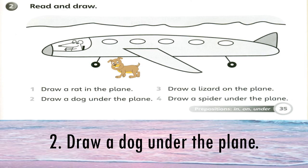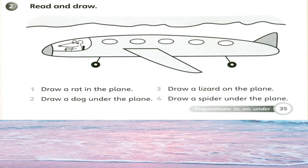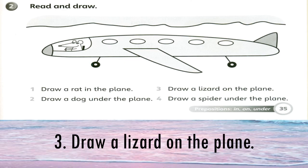Let's look at sentence number three. Draw a lizard on the plane. You are going to draw, lukis, a lizard seekor cicak on. On tu maksudnya di atas. On the plane, di atas kapal terbang. Contohnya seperti ni. Lukis seekor cicak di atas kapal terbang.